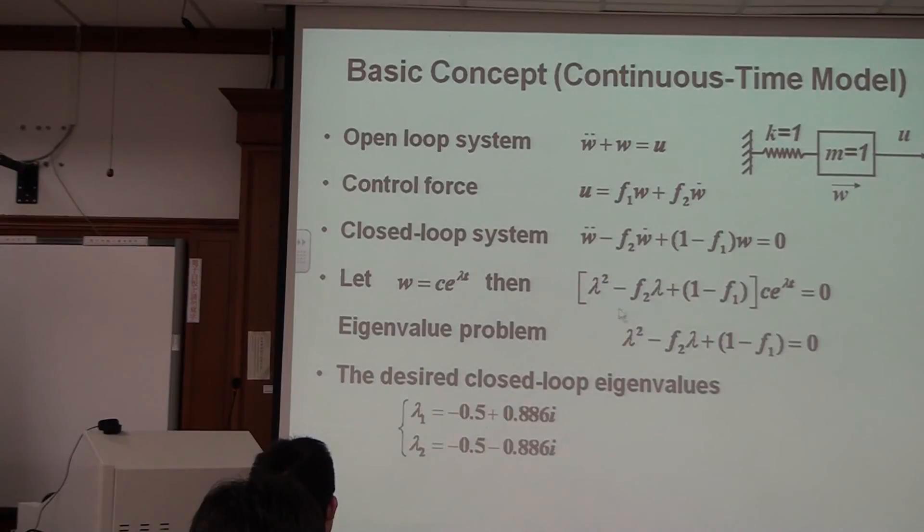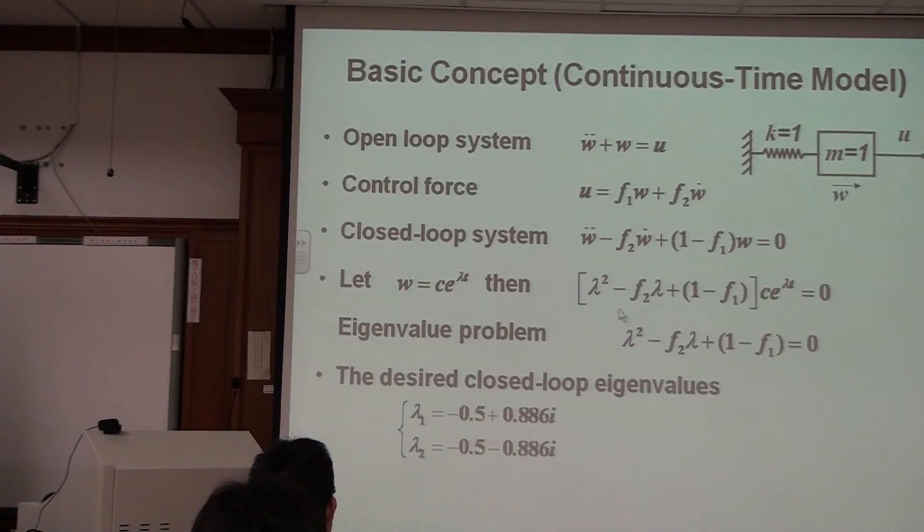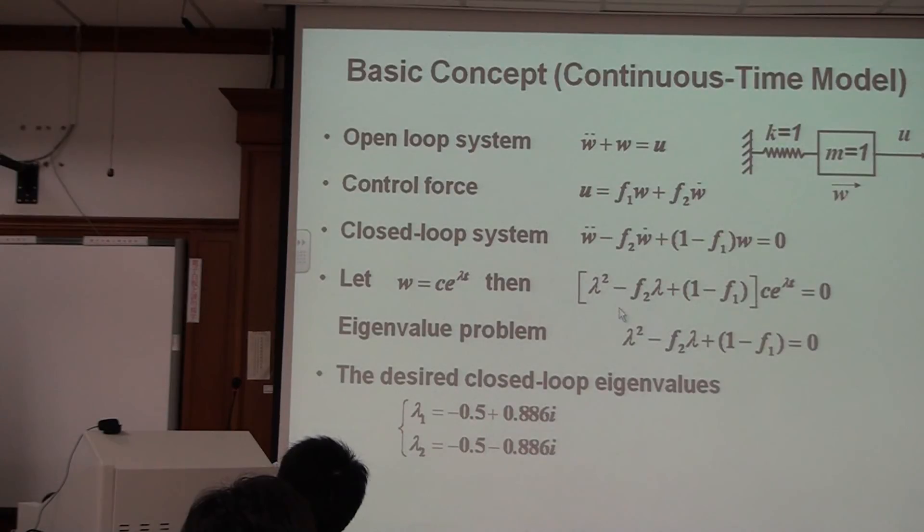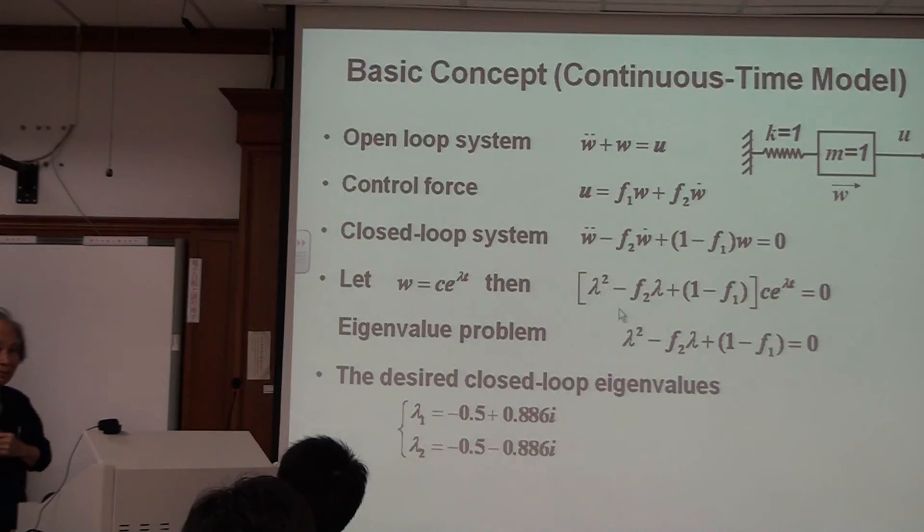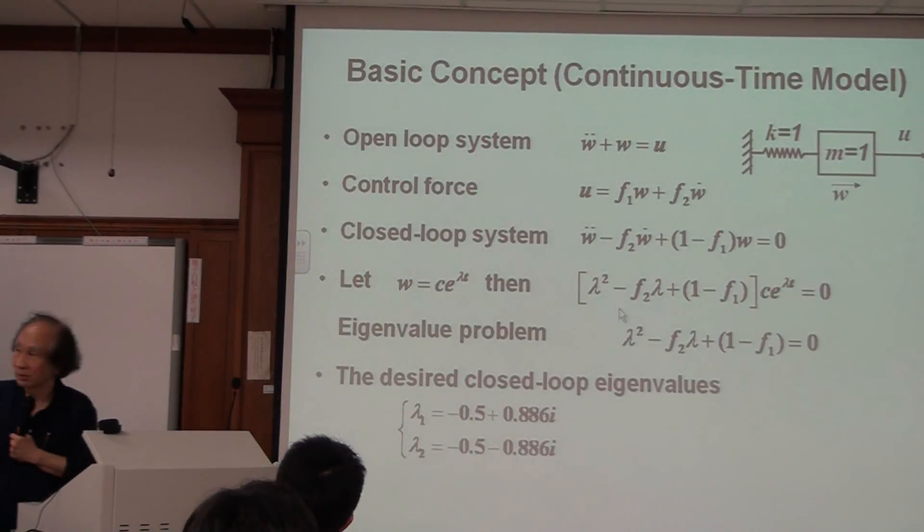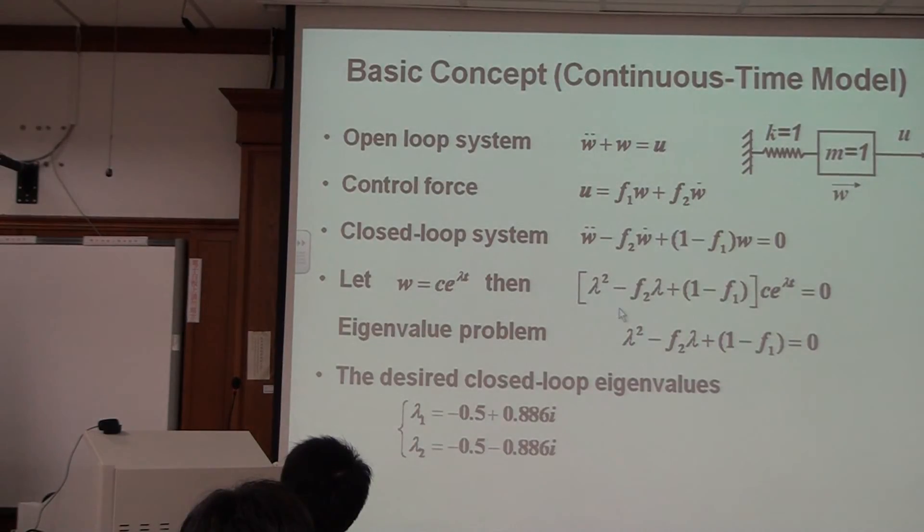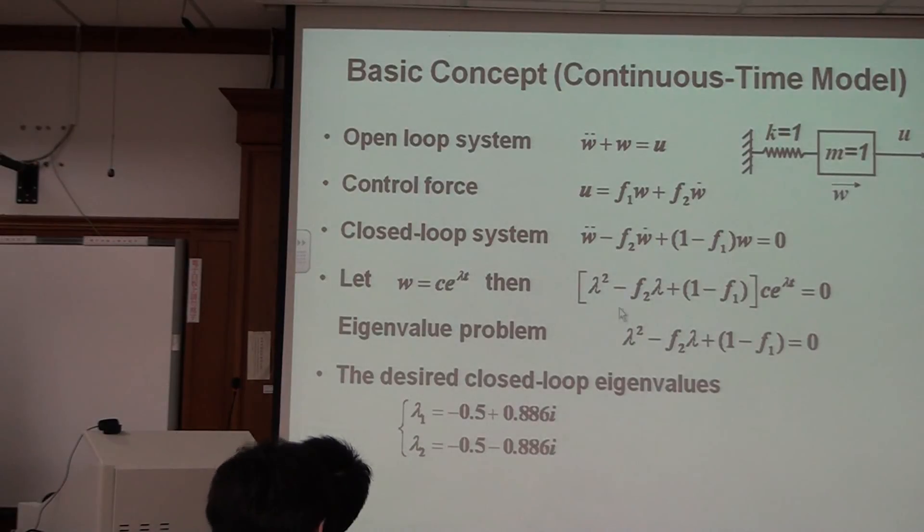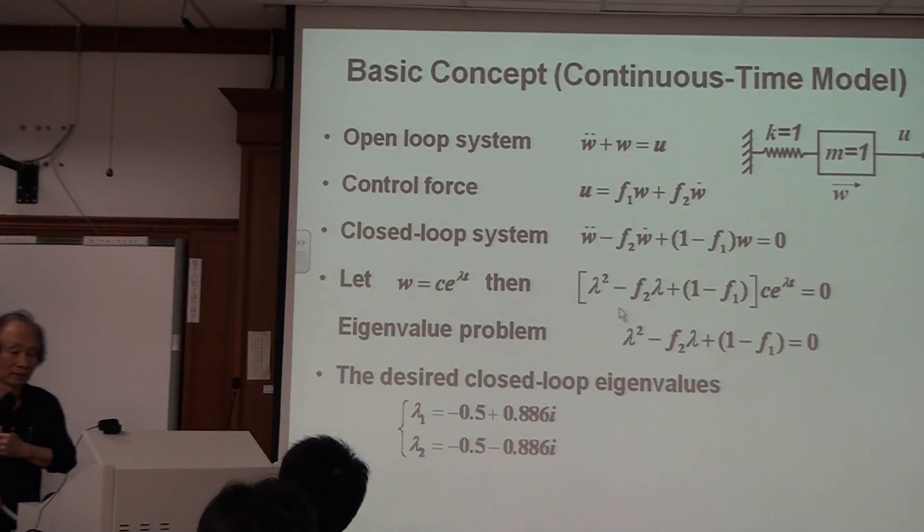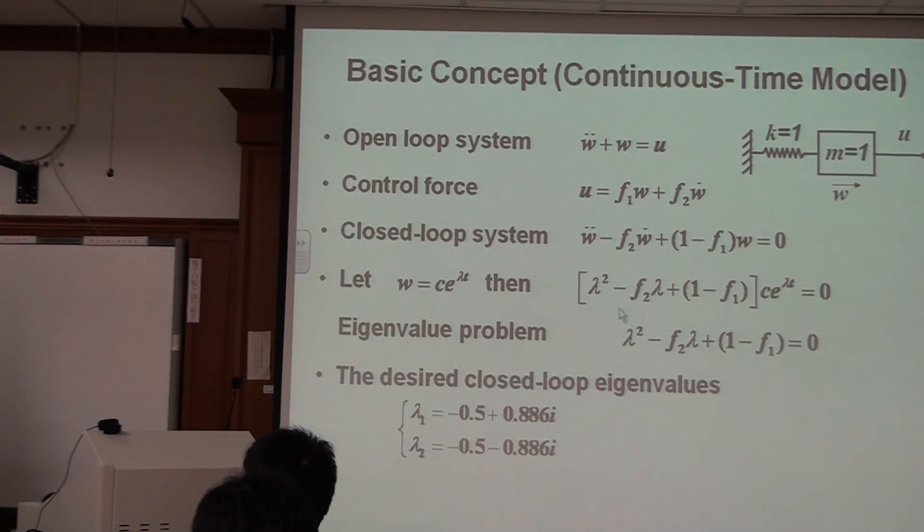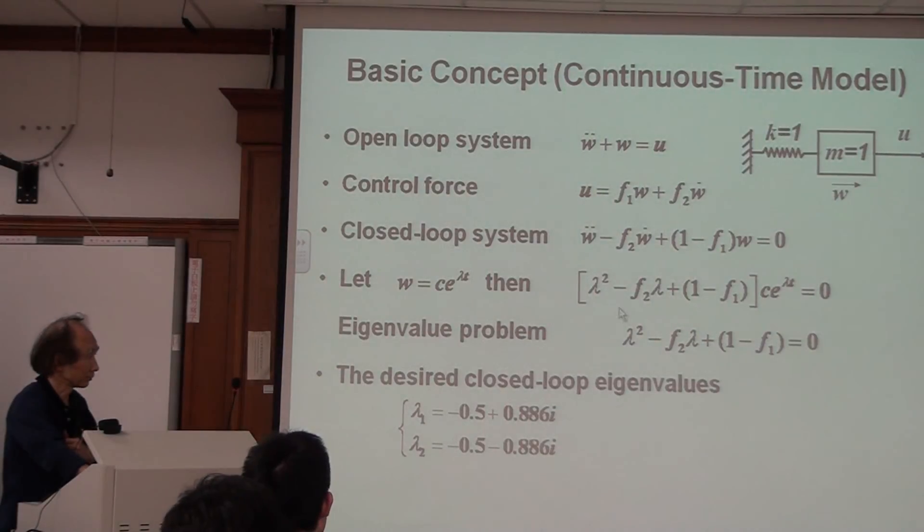Because F1 and F2 must be real. Again, F1 and F2 must be real. If not real, you cannot implement. If we have a complex F1 and complex F2, how can I compute my u to be a complex u? How can I get complex input? That doesn't make any sense, right? So because I want to have real F1 and real F2, so my closed-loop eigenvalue lambda 1 is complex, then lambda 2 must be the complex conjugate. Because then that will guarantee you F1 and F2 are real. That's the reason.